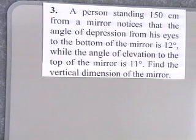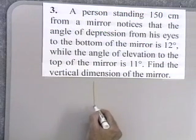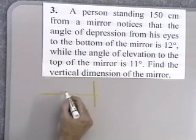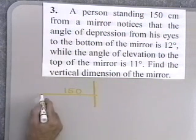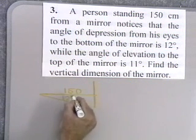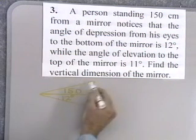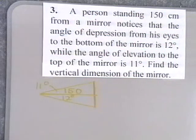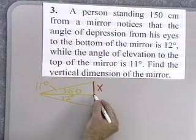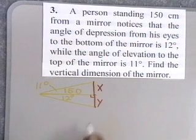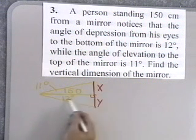A person standing 150 centimeters from a mirror notices that the angle of depression from his eyes to the bottom of the mirror is 12 degrees, while the angle of elevation to the top of the mirror is 11 degrees. Find the vertical dimensions of the mirror. I'll set this up with the mirror here and the person 150 centimeters away. The line of sight down to the bottom is 12 degrees of depression, and the line of sight up to the top is 11 degrees of elevation. I'll mark the upper portion with x and the lower portion with y, then solve one triangle for x and the other for y.